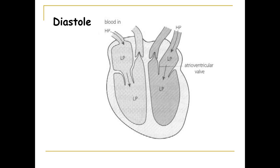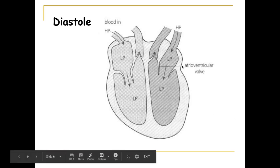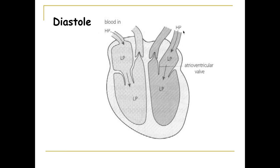During diastole you can see we have low pressure (LP) in the heart and high pressure (HP) coming in from the veins. Focusing on the left side: there is higher pressure coming in from the veins bringing blood back to the heart. Because there is low pressure in the atria, blood flows from the veins into the atria.